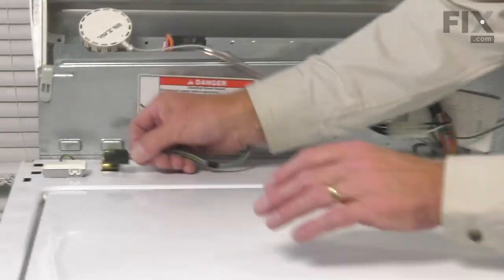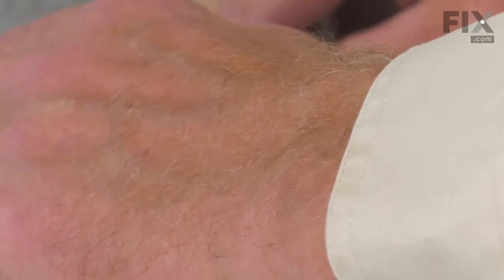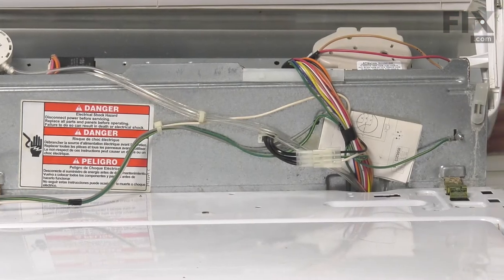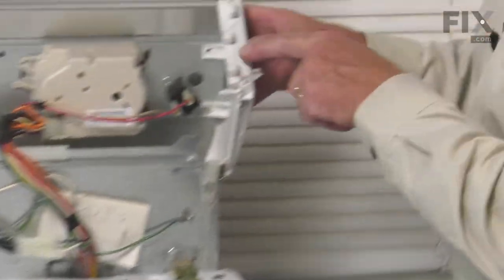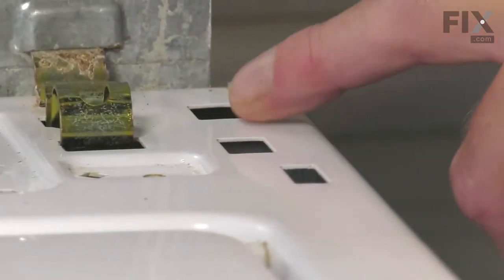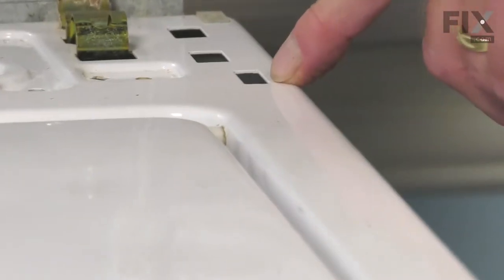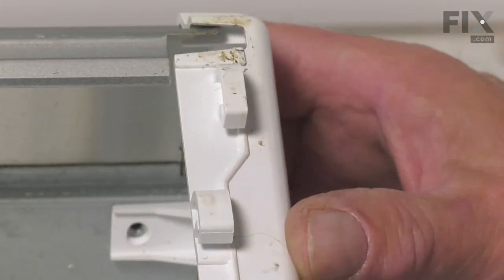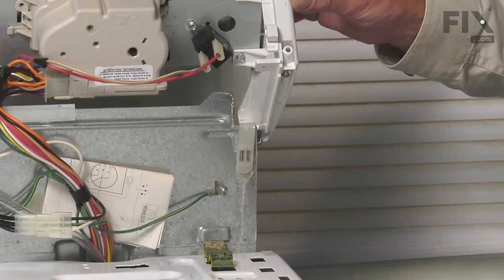We can then reconnect our lid switch harness. Next, we're going to tilt that console forward. We want to make sure that these hooks on the end caps fit into the rectangular holes on the top. There's a little guide hole on the front here as well. Make sure that lines up with this tab. Then once we have those lined up and sitting flush, we'll just push it back slightly.